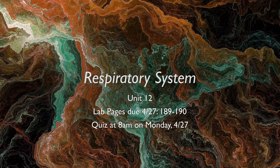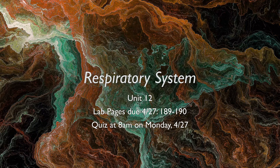Welcome back anatomy students. We are on the respiratory system, which is unit 12. You'll notice that we skipped unit 11 on the endocrine system. So we're on pages 181 and 182.